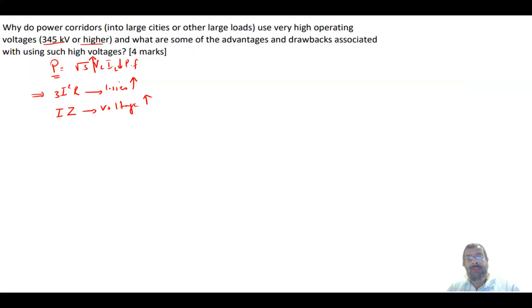The losses will be very high. The voltage drop, which is I times Z, will be high. When we increase the voltage level, we reduce the current because we're maintaining the same power level. This will lead that the losses will be decreased and the voltage drop will also decrease. These are two important advantages when we use high voltages, especially when we are delivering large loads.